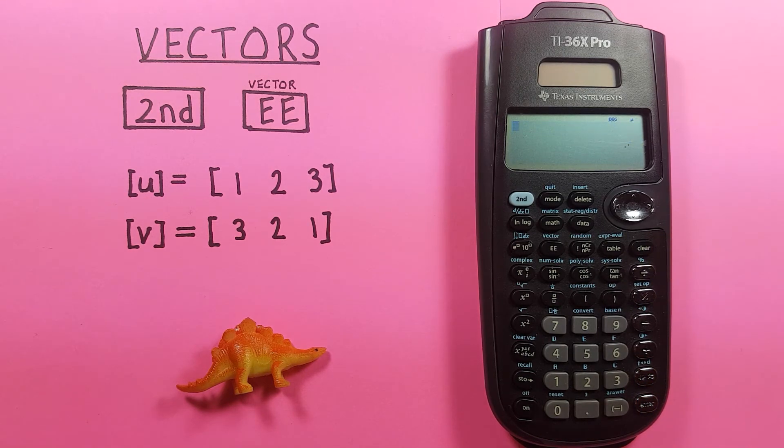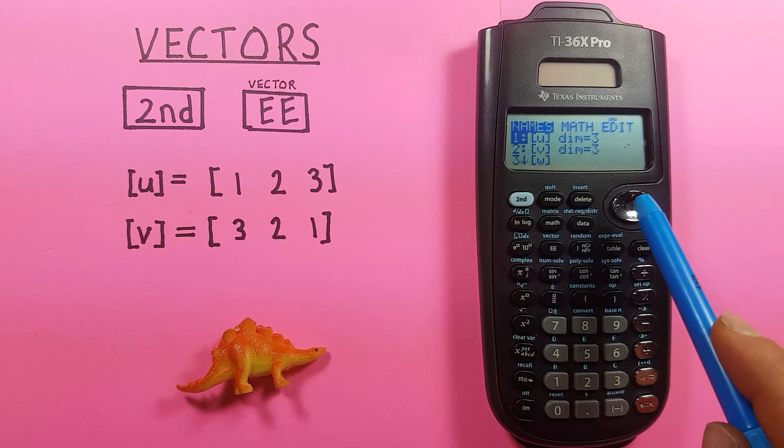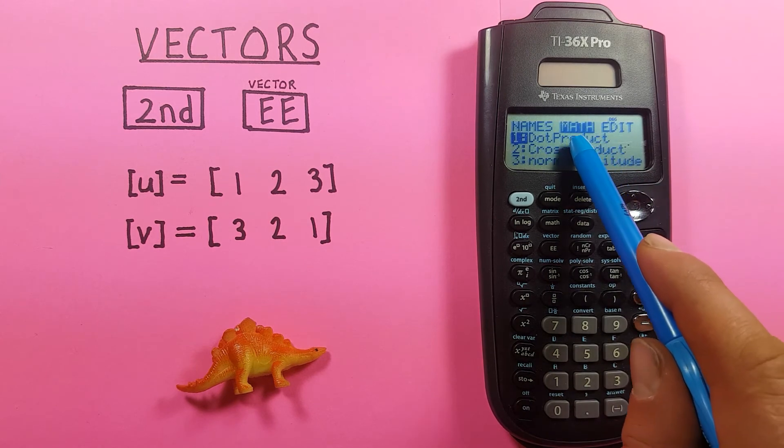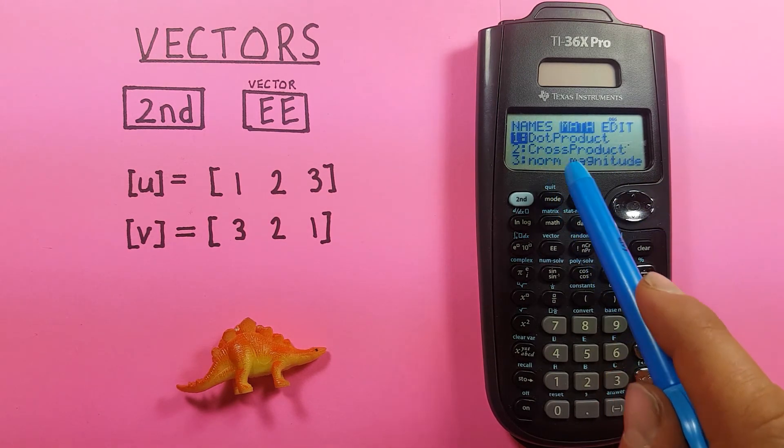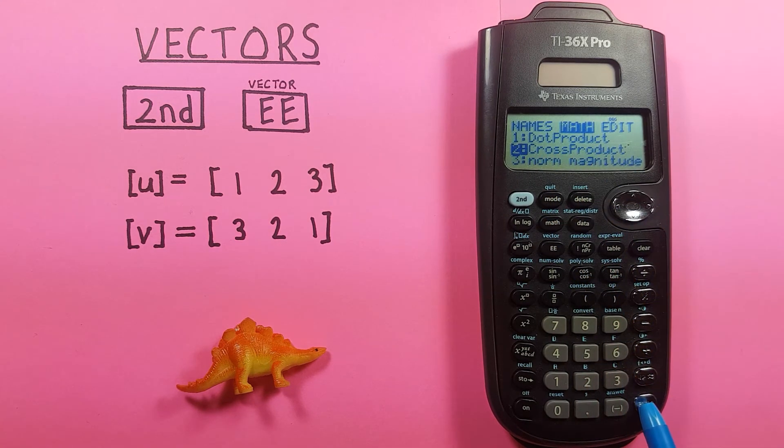Clear that. We can also find the cross product of these two vectors. Just like the dot product, we do this by pressing second EE, moving to the right once to the math menu. And if we scroll down one, we see number two is the cross product. So we press enter.